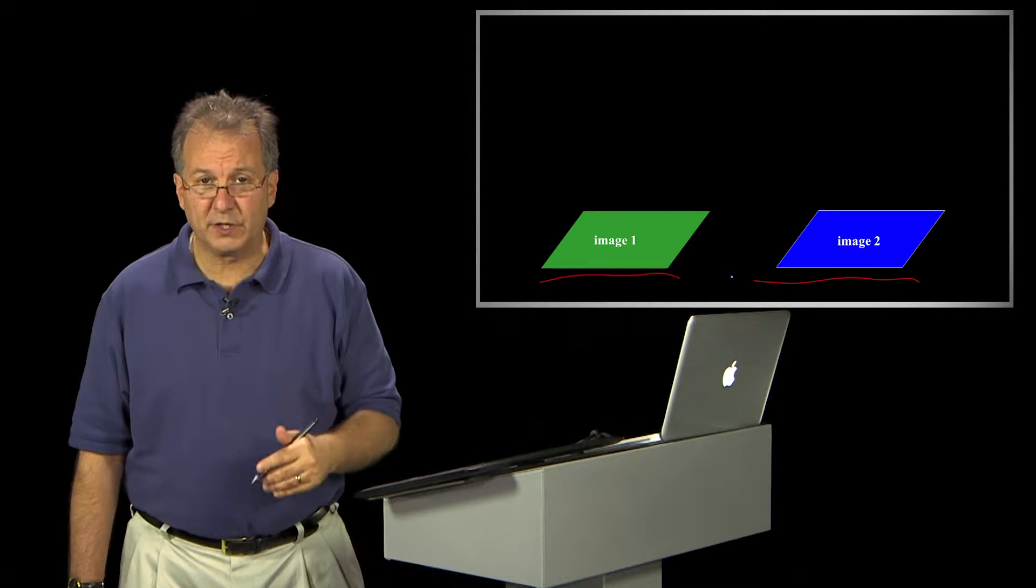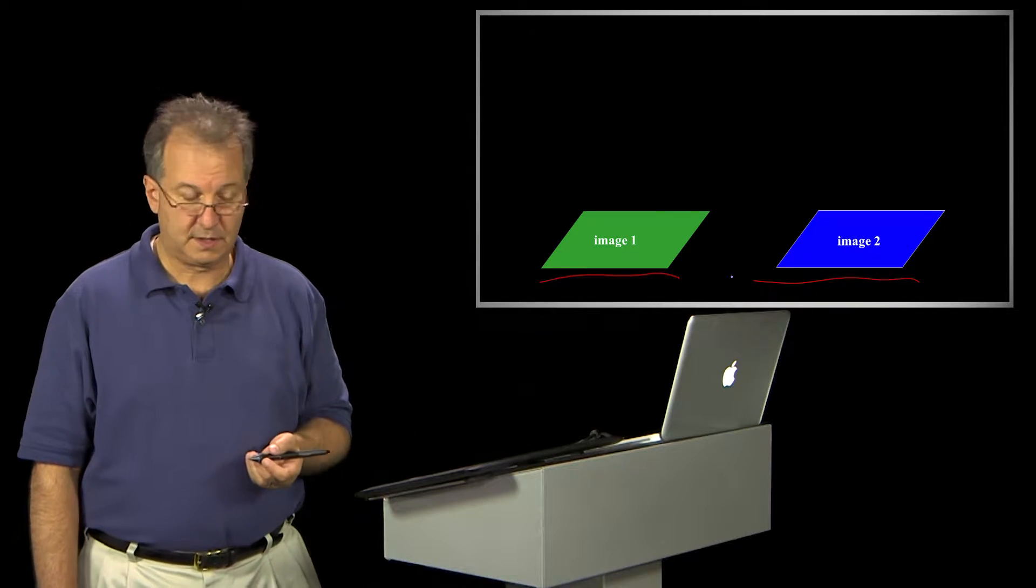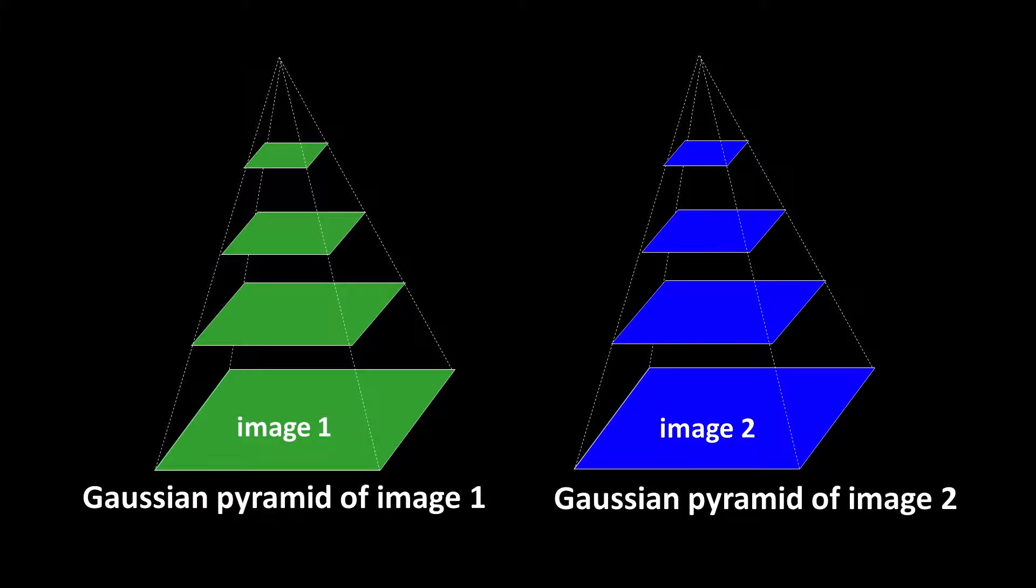The first thing we're going to do is build what are called Gaussian pyramids. And that's illustrated like this. So it's the Gaussian pyramid of image one. We'll talk more extensively in a minute about how you might go about building those pyramids. This is just notionally so you understand what's going on.